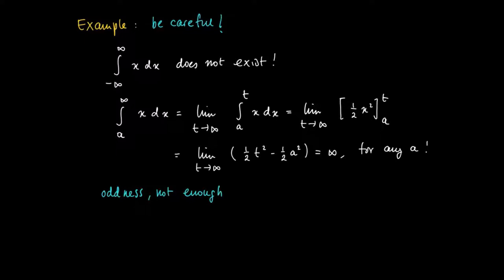Well, why is this case a little bit tricky? This is due to the oddness of the function. So if we look at x, it has as axis of symmetry the line y equals 0.